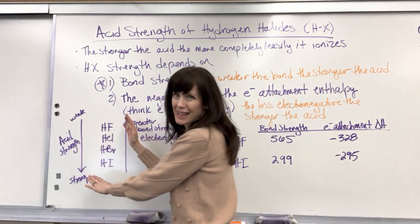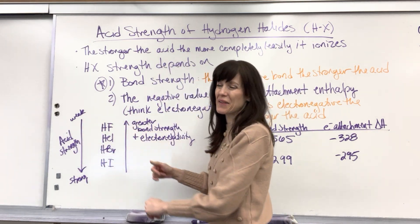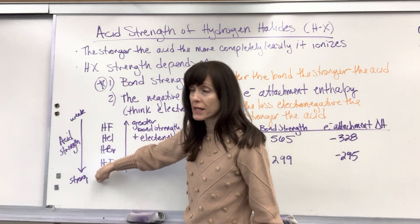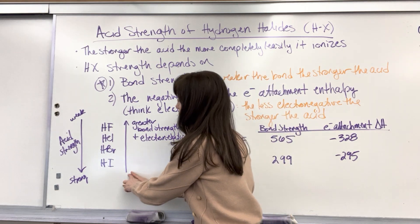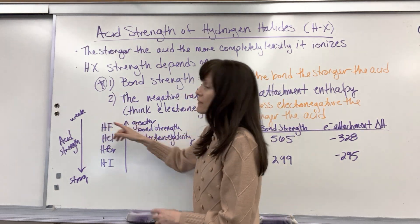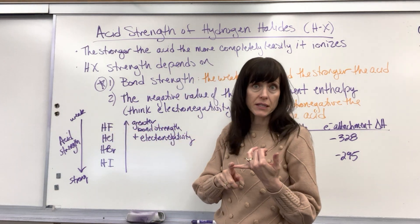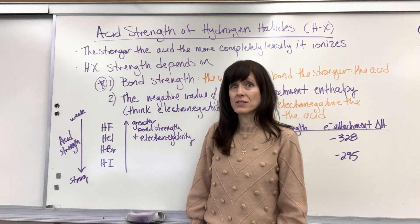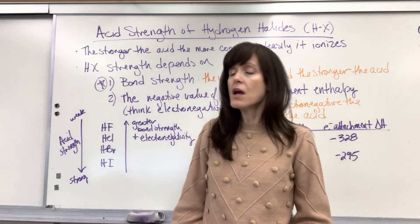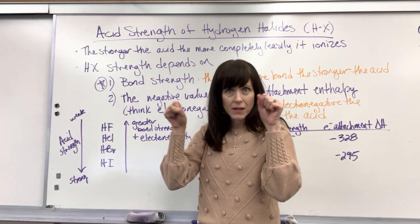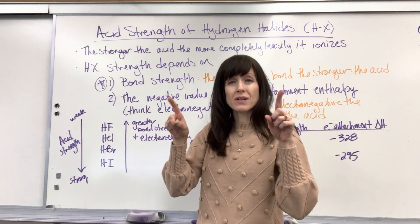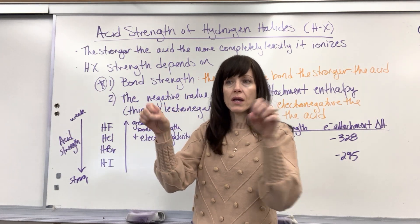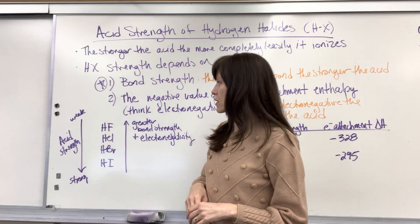So there's an inverse relationship if I look at this based on the periodic table. Strength increases as you go down the periodic table, because as you go up, HF is going to have the greatest electronegativity, the most negative electron attachment enthalpy, and a stronger bond. You can even think Coulomb's Law — because fluorine is a smaller atom, it's going to have a shorter distance between the positive and negative attraction, so it holds tighter, making it a stronger bond.